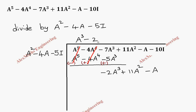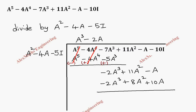Next, multiplying minus 2A by A² gives minus 2A³. Minus 2A times minus 4A gives plus 8A². Minus 2A times minus 5I gives plus 10A. After subtraction, minus 2A³ terms cancel. 11A² minus 8A² gives 3A². Then minus A minus 10A gives minus 11A. We carry the last term minus 10I.